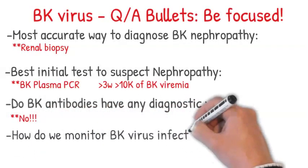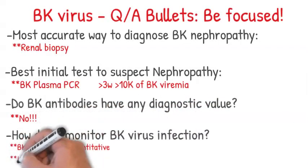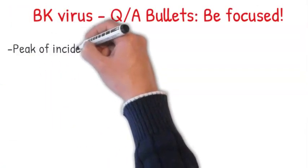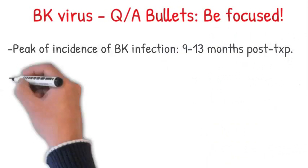How do we monitor BK virus infection? You do BK plasma PCR quantification. Some centers, including ours, check BK urine PCR every month during the first year. Once BK urine is positive, you do BK plasma PCR. If it's positive with normal creatinine, start dropping the immunosuppression. If it's positive with elevation of creatinine, consider doing a biopsy. Peak incidence of BK infection is 9 to 13 months post-transplant.